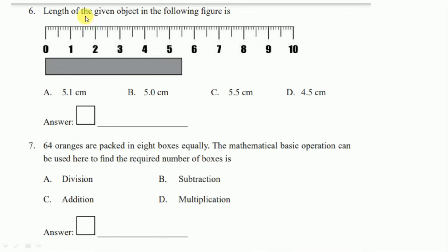Question number six: the length of the given object in the following figure. The object measures five centimeters, and the small lines beyond five read one, two, three, four, five — making it five point five centimeters. The right answer is C, five point five centimeter.